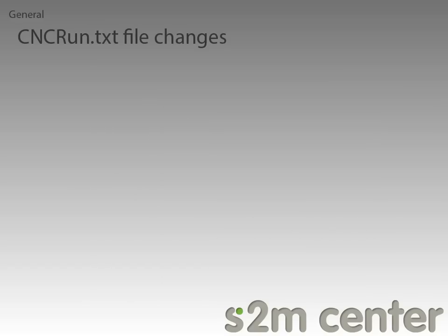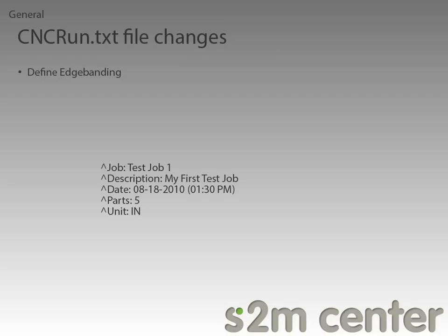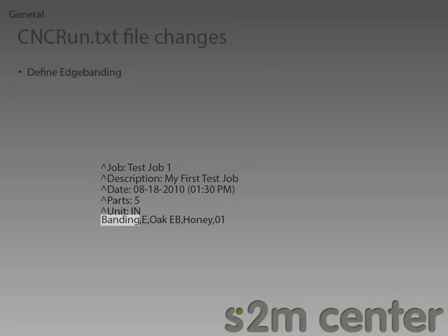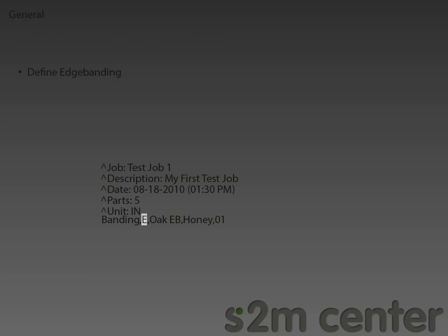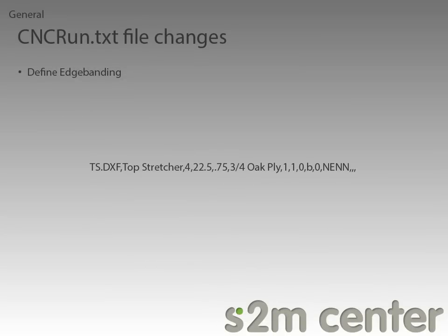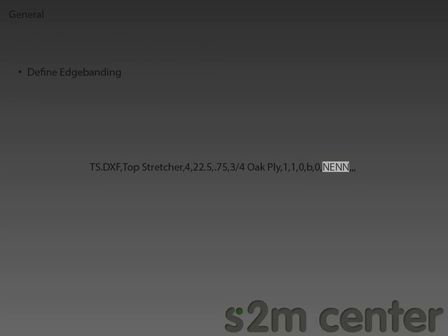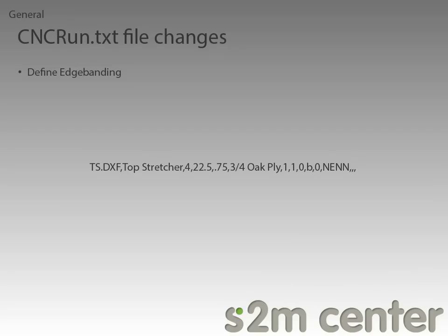Finally, I want to go over a couple of changes that we made to the cncrun.txt files. First, we gave you the ability to define edge banding. In a typical header file, you can now include the list of edge banding that you will use. The information included is: one, that this is an edge banding; two, the code that represents this edge banding; three, the material that the banding is made of; four, the color of the banding; and finally, the thickness of the edge banding. In a typical Part Line from the cncrun.txt file, we can see that we have the ability to define a banding code, which the S2M Center will be able to read since we defined our banding in the header.